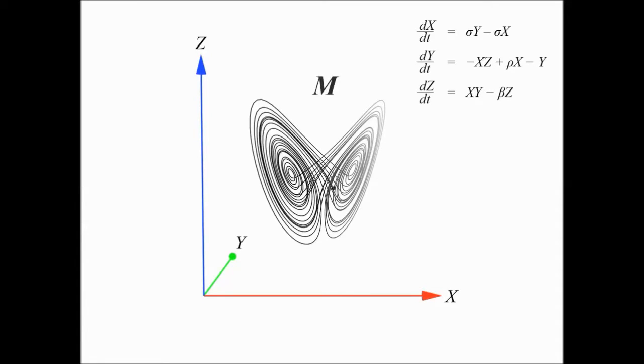The manifold M consists of the set of all trajectories, and phi is the flow on M defined by the coupled equations. m is a point on the manifold.